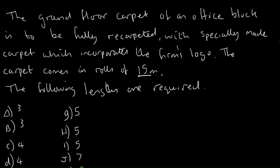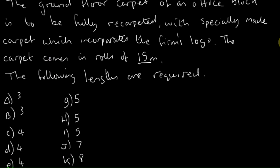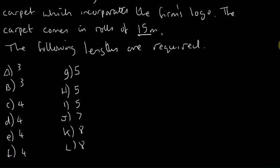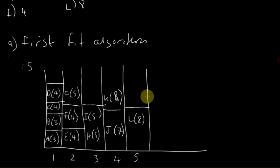So if we take it in context as a question, the ground floor carpet of an office block is to be fully recarpeted with specially made carpet which incorporates the logo. The carpet comes in rolls of 15 meters. We wanted to determine how the lengths should be cut from the rolls. And essentially, if we cut it in this sequence here, this order, then you're going to be left with...